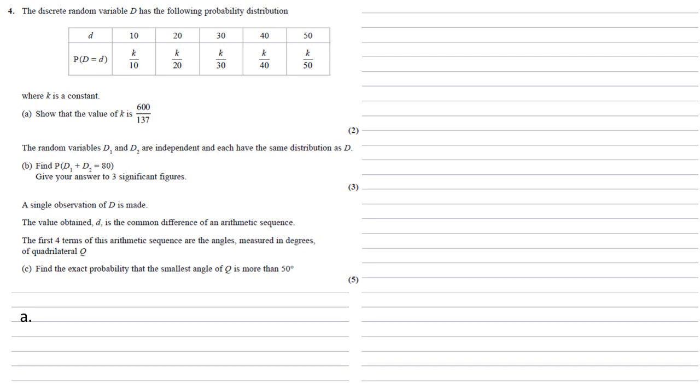For Part A, we need to show that the value of K is 600 over 137. To do this, we know that the bottom row, all those probabilities, must equal 1 because these cover all the things that could happen. So setting all of those K fractions equal to 1, we get K over 10 plus K over 20 plus K over 30 plus K over 40 plus K over 50 equals 1.